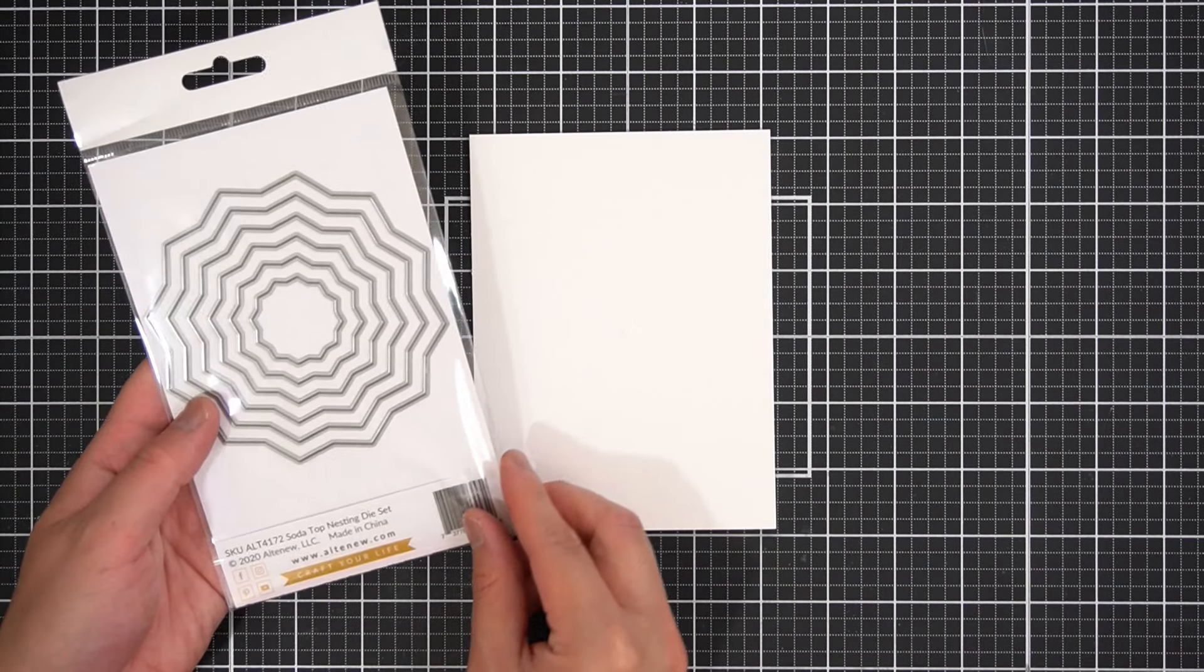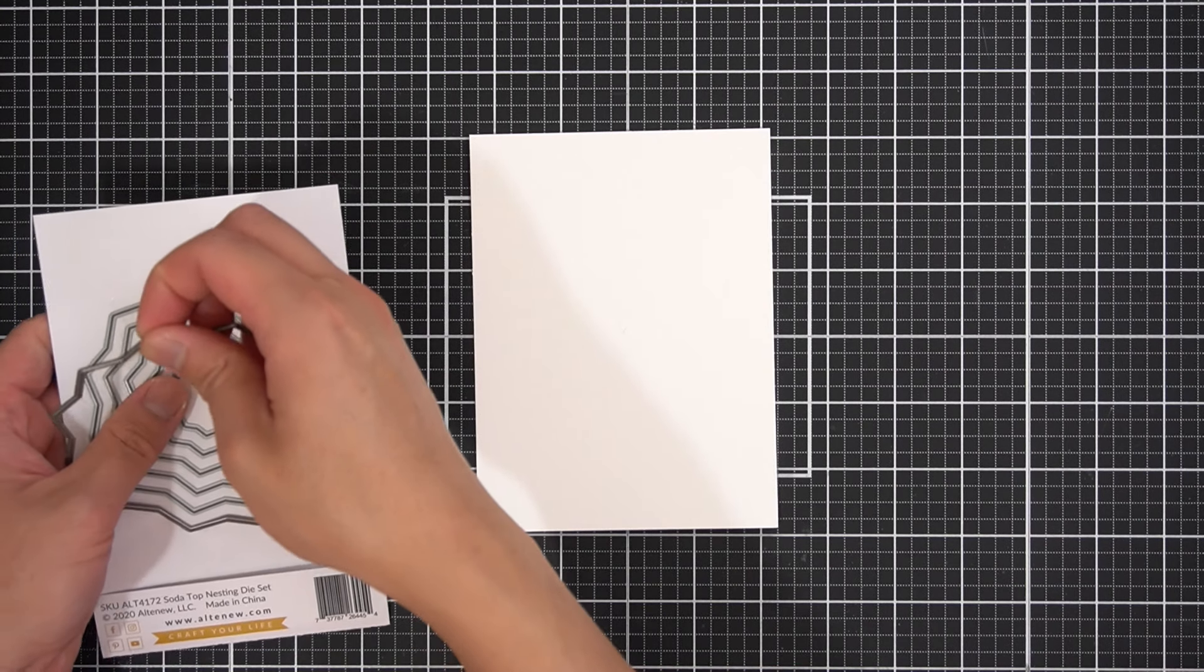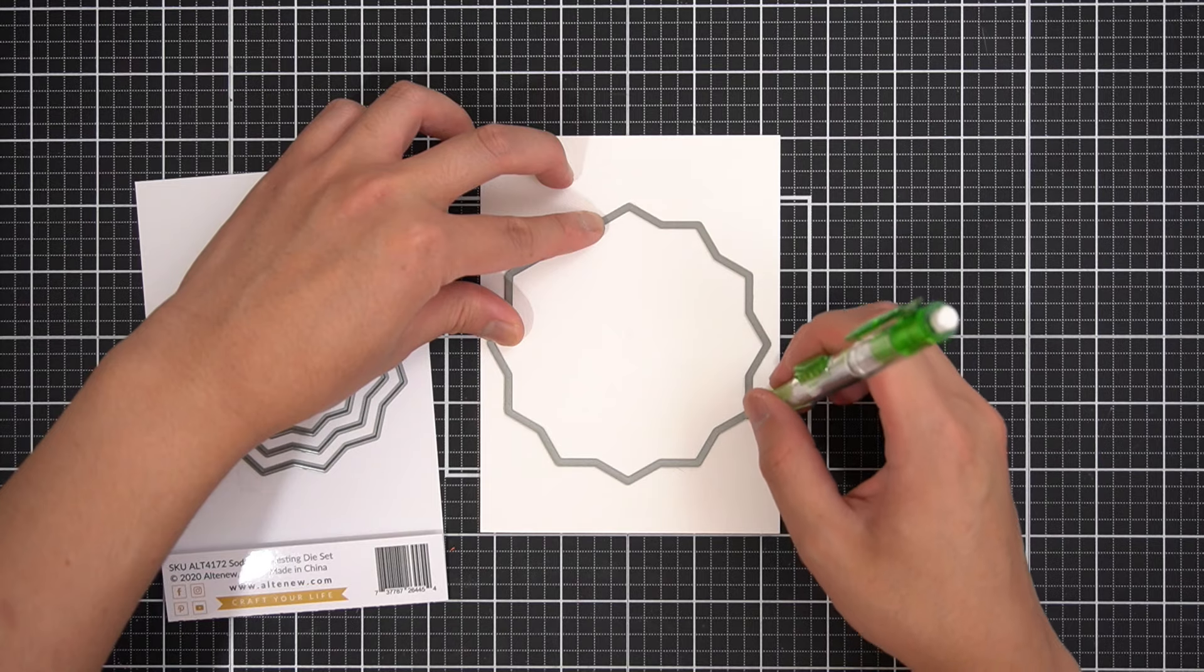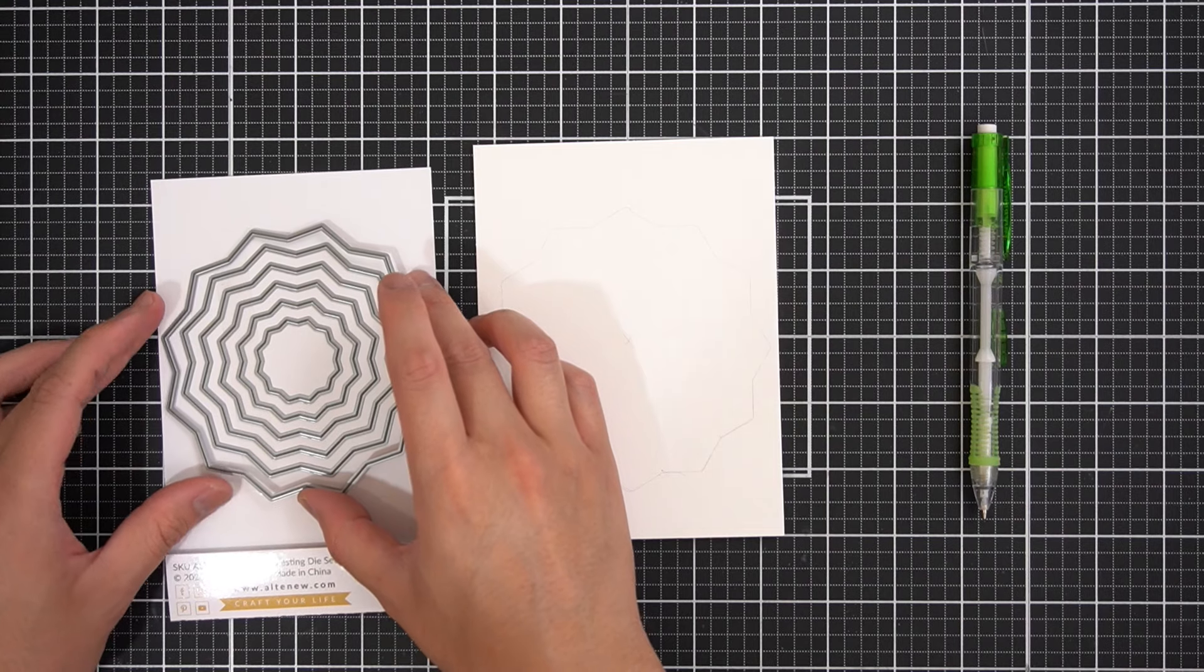Taking the largest die of the Soda Top Nesting Die Set, I'm going to very roughly trace the outline of the die. I'm being generous with the spacing as I don't want this pencil line to show up in the final tie-dye piece. These lines are just guides.